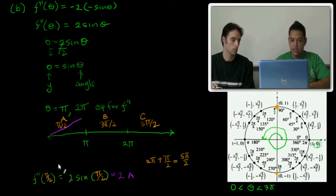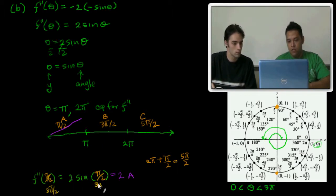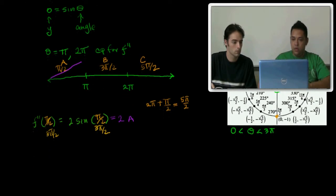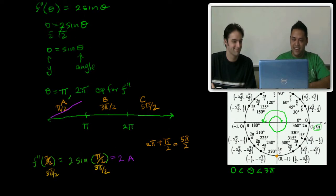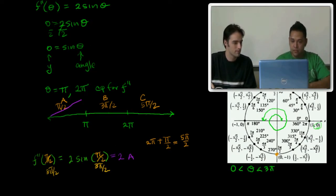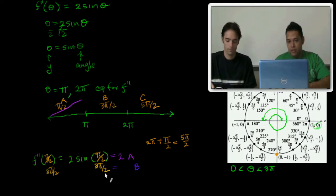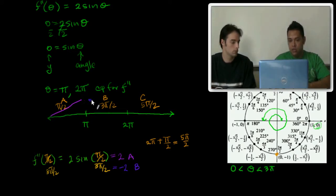And now we need to test the next region B, which would be 3π/2. So we're testing region B now. Well, 3π/2 is down here. The sine of 3π/2 is negative 1. Negative 1 times 2 is negative 2. So that means that we would be decreasing from here to here.